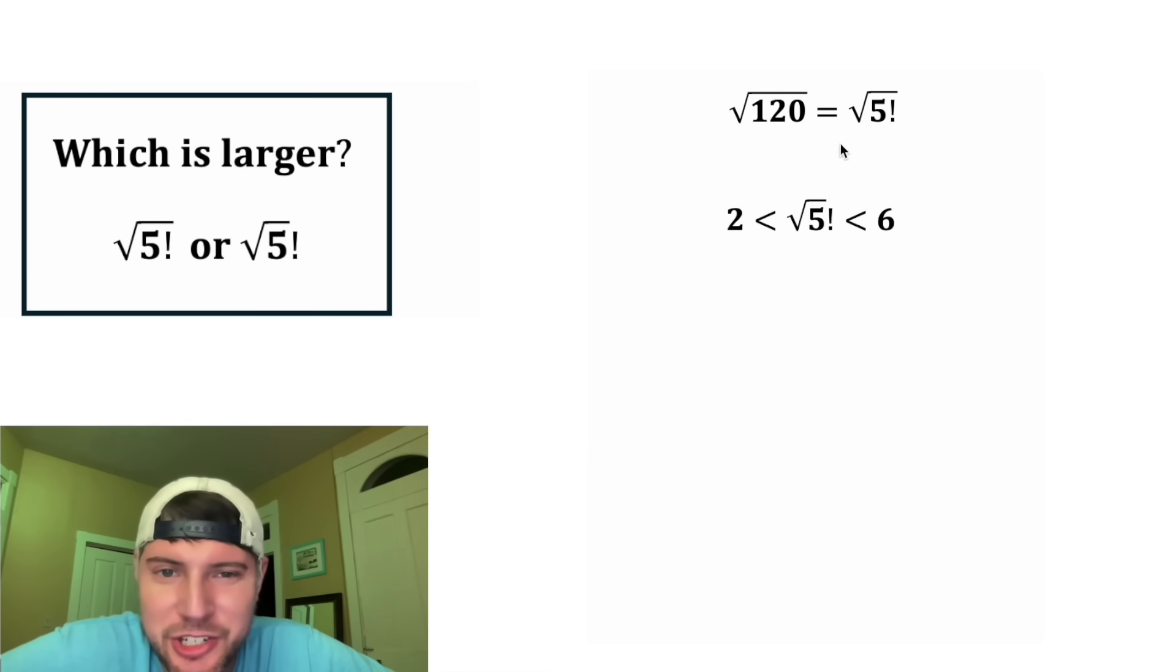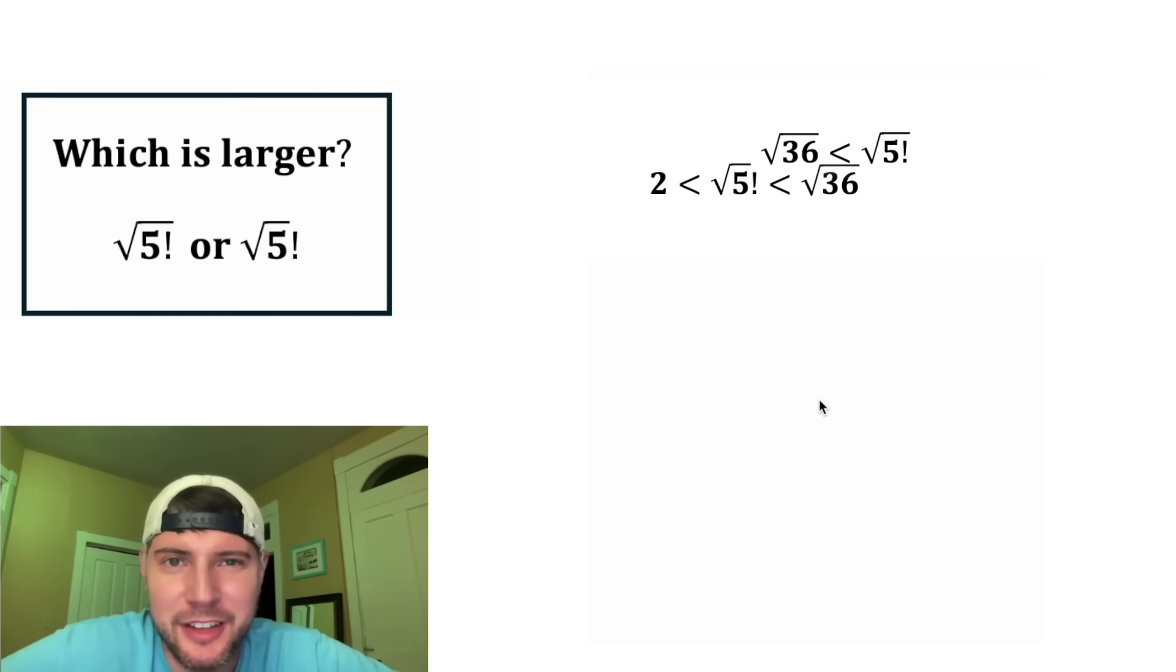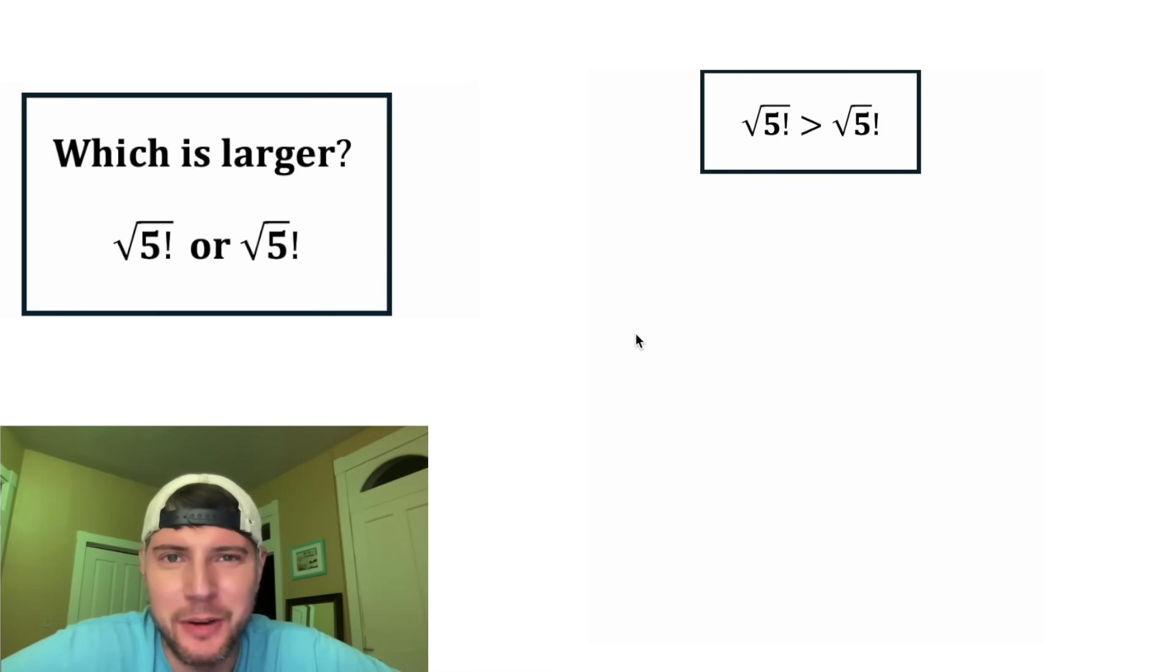Now I think we can find a relationship between these. This 6 would be the same thing as square root of 36. And then if we go back up here, we know for sure that square root of 36 will be less than square root of 120. And then we know that the square root of 120 is equal to the square root of 5 factorial. So let's replace the square root of 120 with square root of 5 factorial. Now both of these contain a square root of 36. Let's smash them together. And we're not going to need the 2 or the square root of 36. And these ended up switching order. Let's swap them. And this is the answer to our question, let's put a box around it.